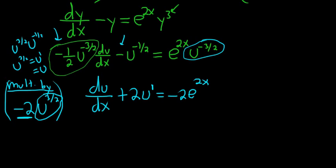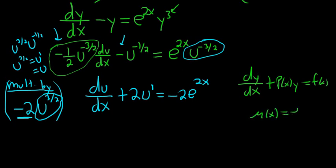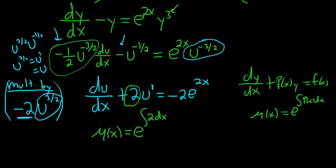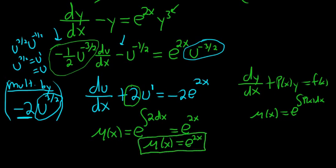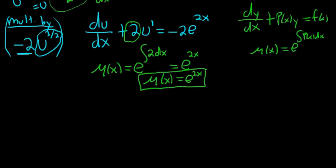Now we need to find our integrating factor. Recall that for a DE of the form du/dx plus p(x)·u equals f(x), the integrating factor is mu(x) equals e to the integral of p(x) dx. Here, p equals 2, so mu(x) equals e to the integral of 2 dx, which is e to the 2x. That is our integrating factor — mu(x) equals e^(2x). I'm putting that in a box because that is an accomplishment.